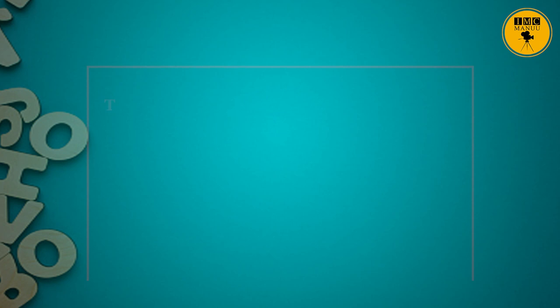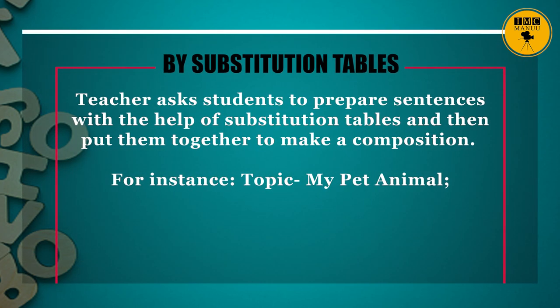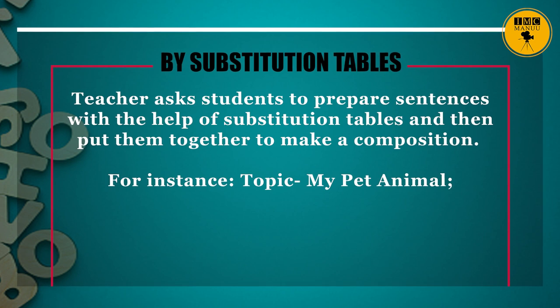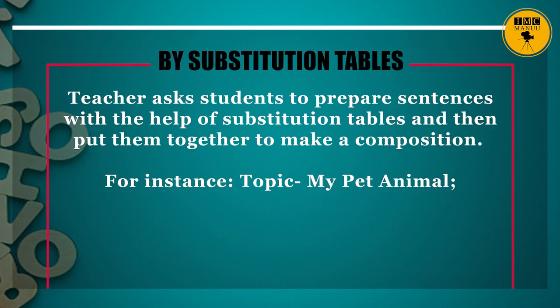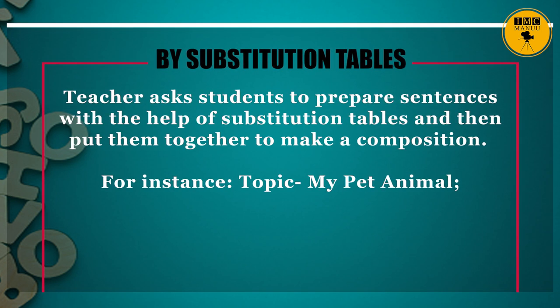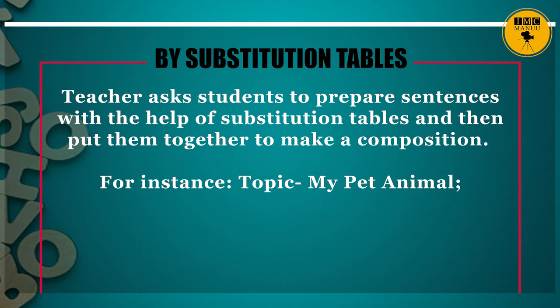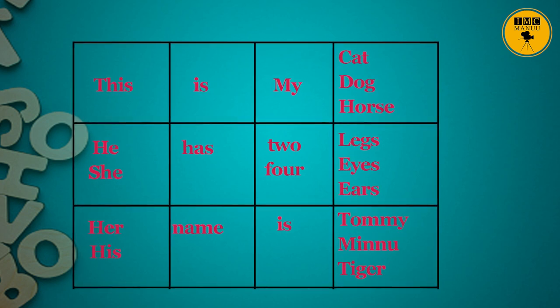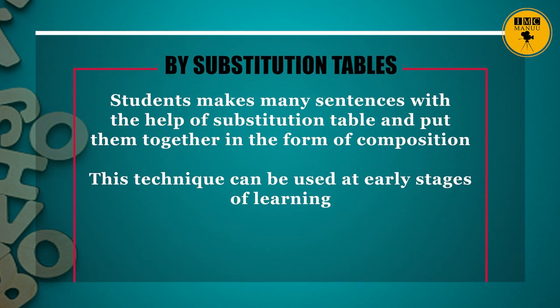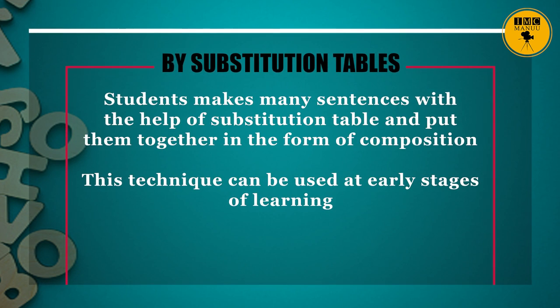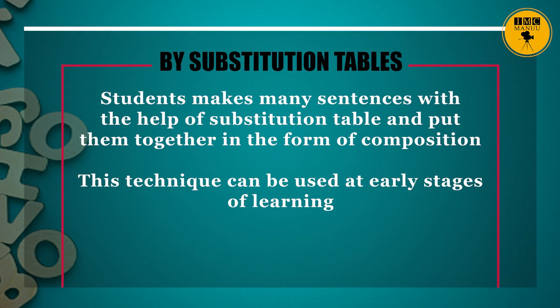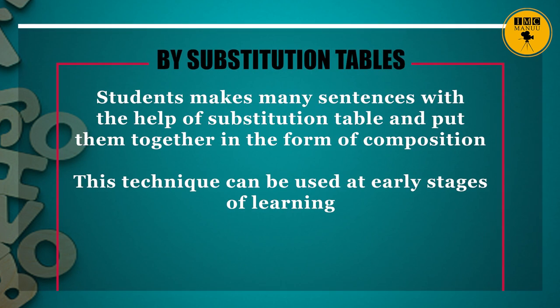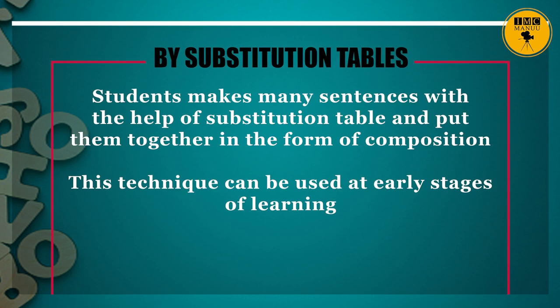The second technique is teaching guided composition with the help of substitution tables. In this technique, the teacher asks students to prepare sentences with the help of substitution tables and then put them together to make a composition. For instance, the topic 'My Pet Animal' — students make many sentences using the substitution table and combine them into a composition. This technique can be used at early stages of learning.